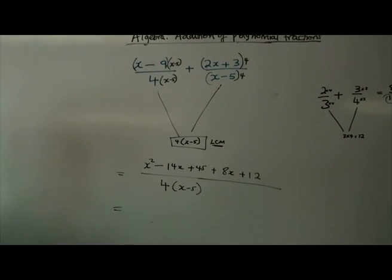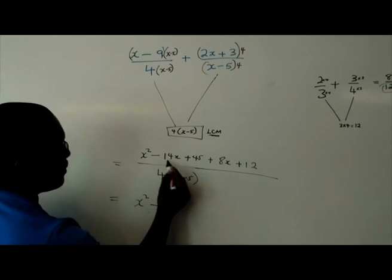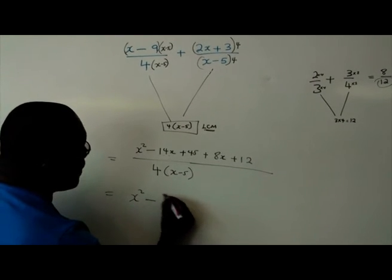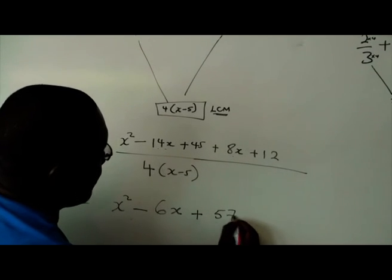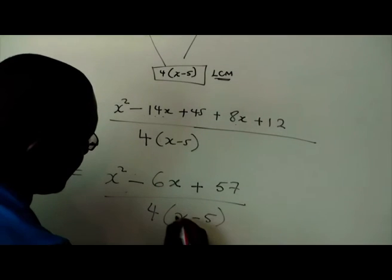Now let's add and subtract like terms. You find it's going to be x squared minus 14x plus 8x, which is minus 6x plus 57 over 4x minus 5.